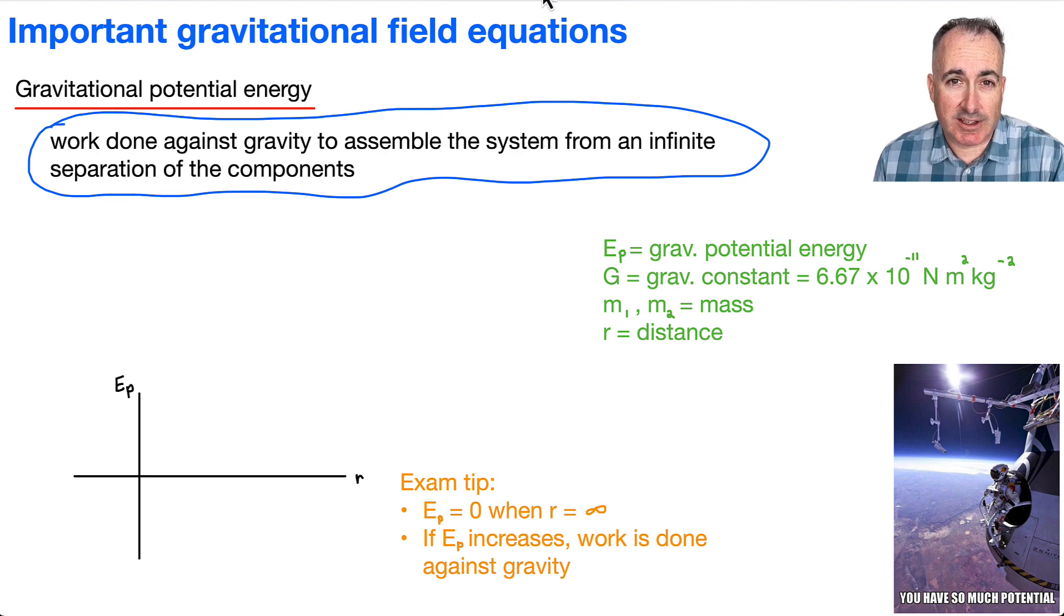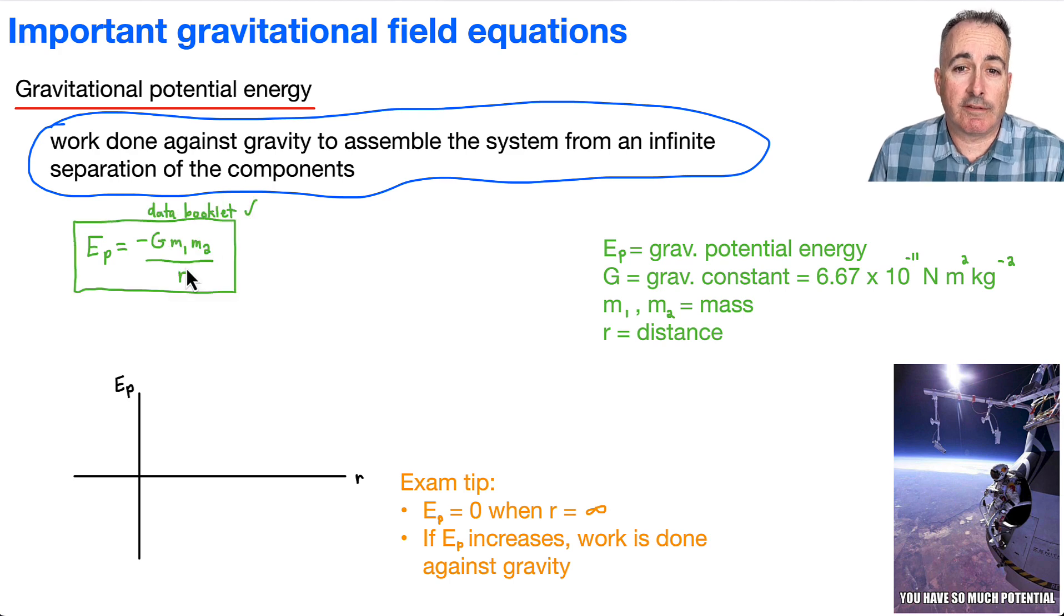So we're going to first have this equation here that's from our data booklet, and it goes like this. Ep equals, remember I said it's going to be negative, it's going to be G m1 m2 over r. So if we're going to define our variables, well, Ep is gravitational potential energy. Energy is measured in joules.